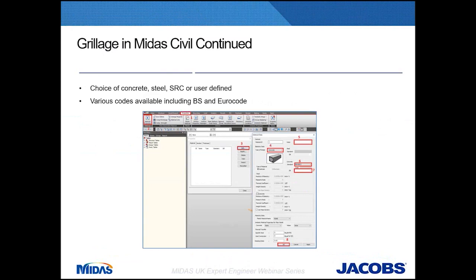Once nodes are created we can proceed to create materials for the elements. There is a variety of standards to choose from, including British Standards and Eurocode. It should be noted that materials created in the sectional property calculator within Midas Civil are not transferable and are only used to calculate section properties. However, if you have a steel-concrete composite section created in Midas Civil, you should define it as steel when importing it back into the model, because the sectional property calculator converts a composite section into equivalent steel before calculating the properties.